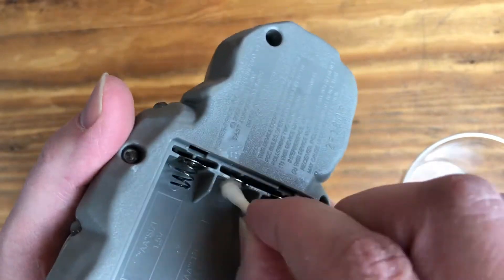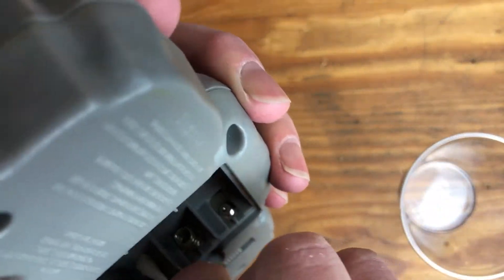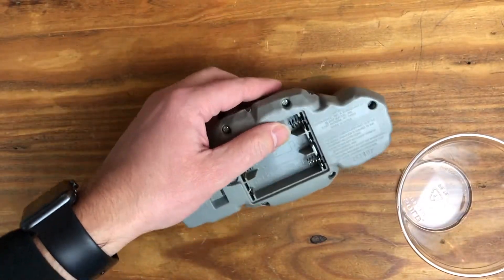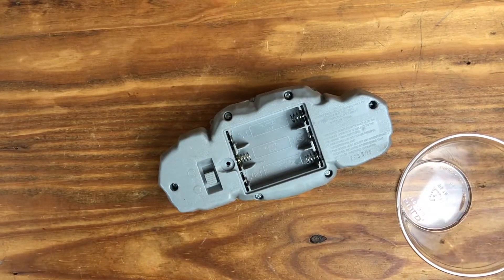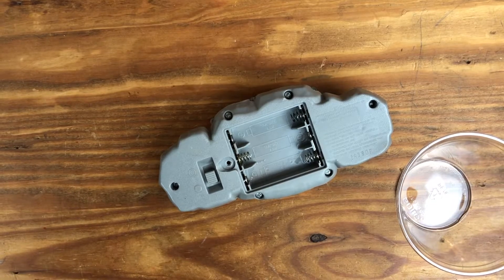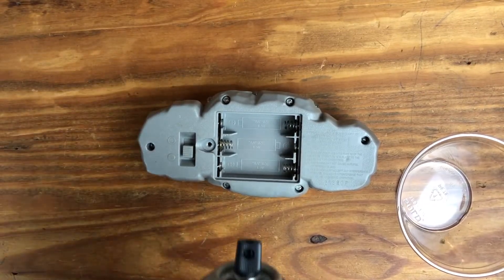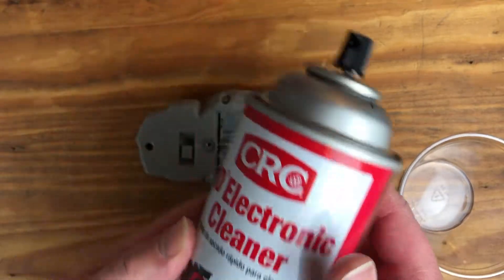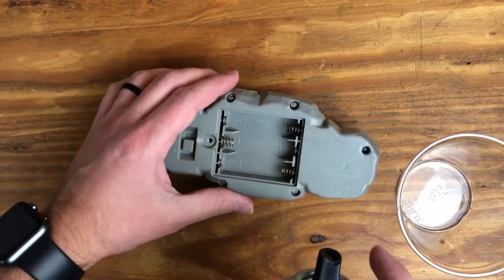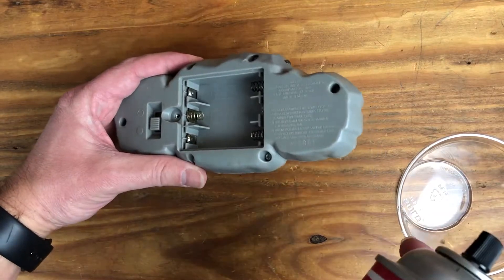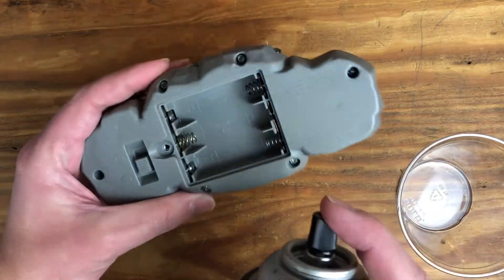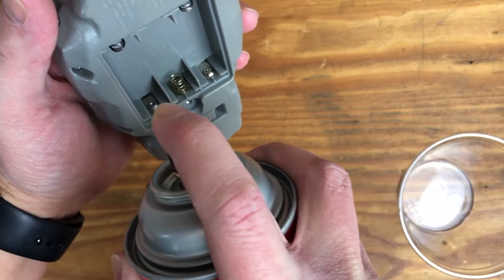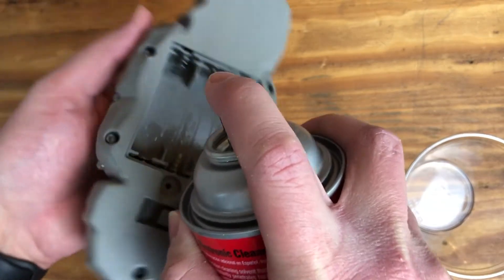Then you're just gonna let that air dry for a second and we'll do the last step. And lastly, if you don't have this it's okay, I'm actually gonna leave a link for this. This is called QD electronic cleaner. This will just help a little bit more for the contact stuff and you might even could just use this instead of doing the whole process.